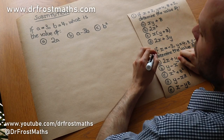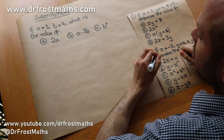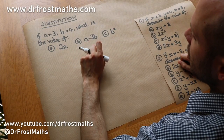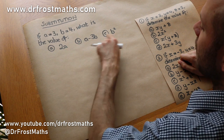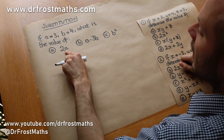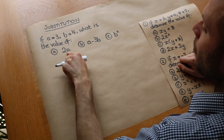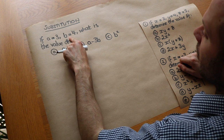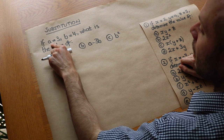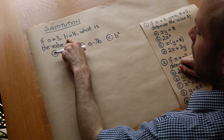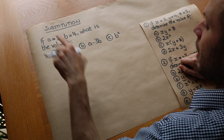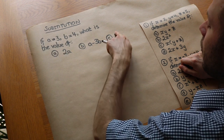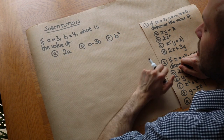Hello and welcome to this video on substitution. What I mean by substitution is: if you have different algebraic expressions, and someone gave you the values of each of the variables — so a is equal to 3 and b is equal to 4 — then how do I find the value of these expressions?